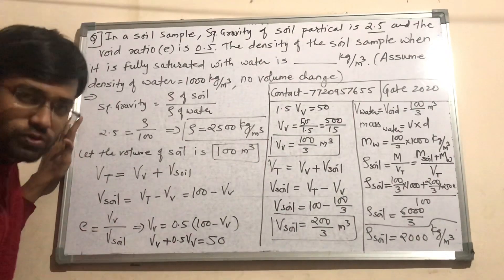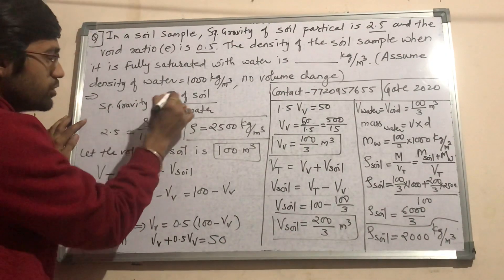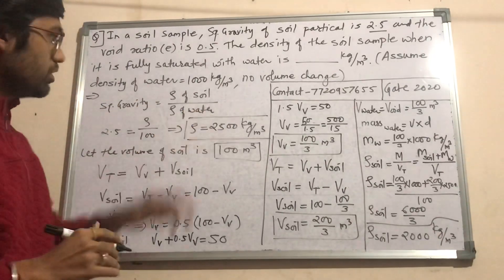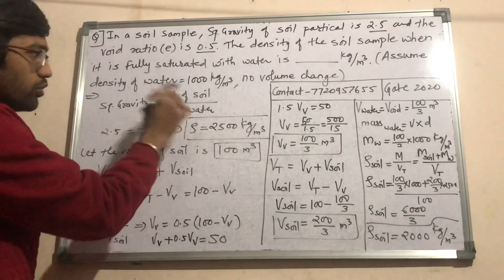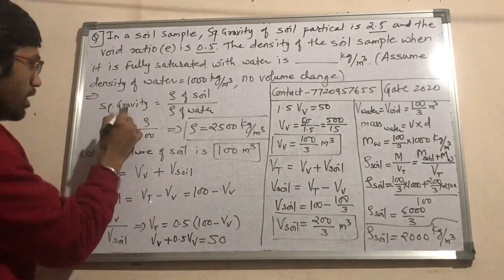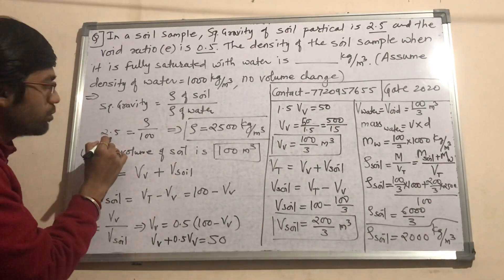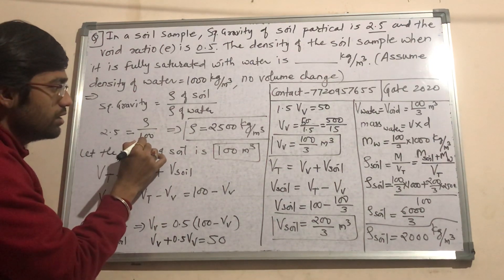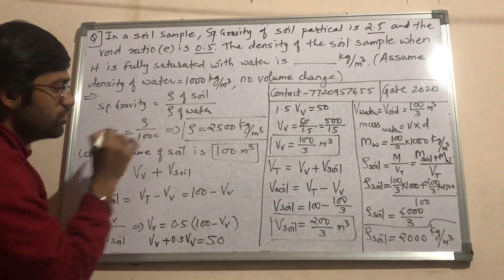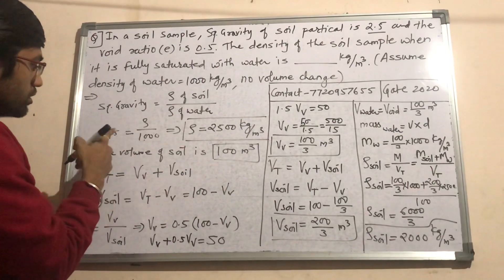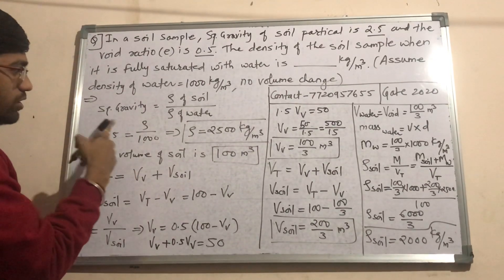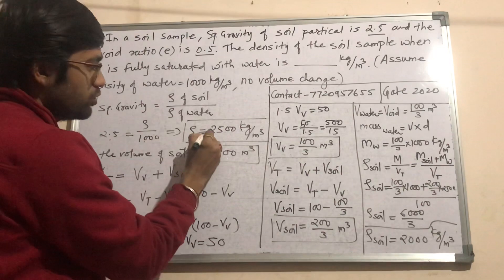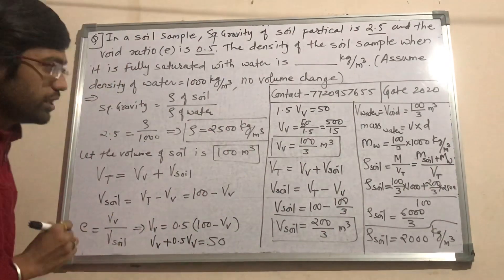You know the basic formula for specific gravity: specific gravity is equal to density of the soil upon density of the water. We don't know density of the soil. We have the specific gravity which is given as 2.5 and density of water is 1000. Shifting 1000 to the left hand side, you get 2.5 multiplied by 1000 — so your density of soil will be 2500 kg per meter cube.